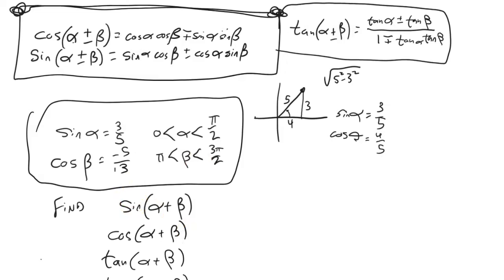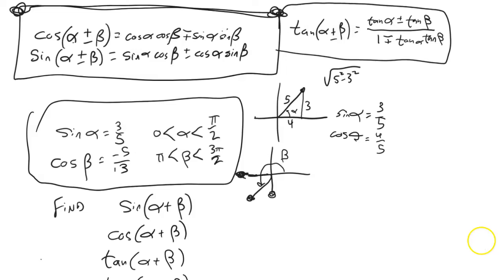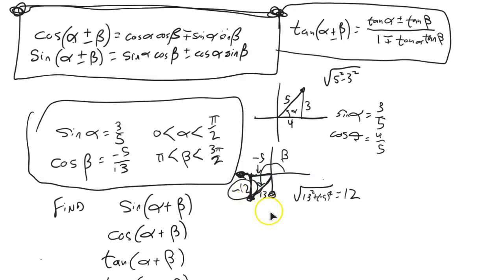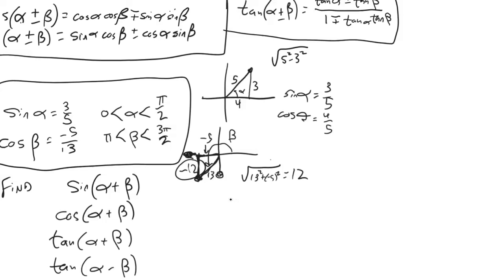For beta: it's between pi and 3pi over 2, which puts it in the third quadrant. Cosine of beta is negative 5 over 13, so this x-distance is negative 5 with hypotenuse 13. By Pythagorean theorem the remaining side is 12, but since beta is in the third quadrant this direction is downward, so the y-value is actually negative 12 — not just 12. That's where people miss this type of problem: forgetting about direction. So sine of beta is negative 12 thirteenths.